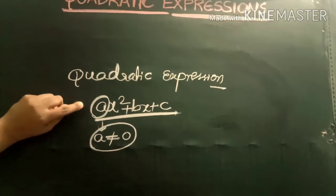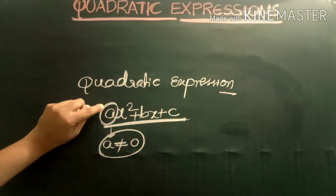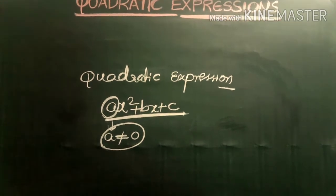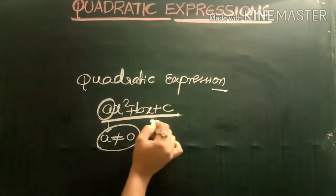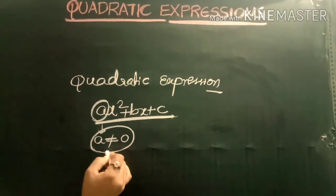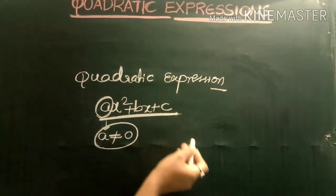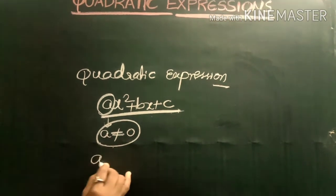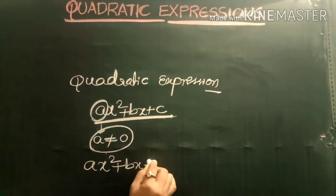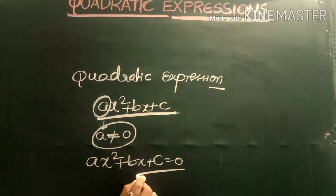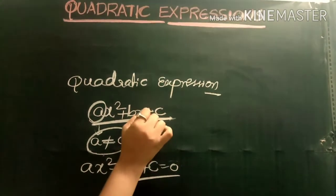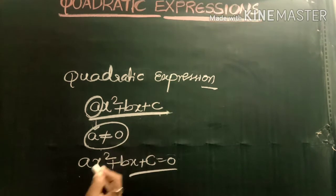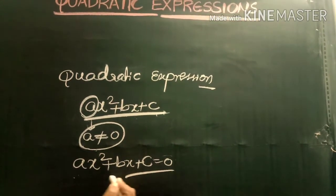Quadratic means the polynomial contains the x² term. If a ≠ 0, then ax² + bx + c is called the quadratic expression. Now, the quadratic equation: ax² + bx + c = 0 is called the quadratic equation. That is, if we set the expression equal to 0, it becomes an equation. So ax² + bx + c is the quadratic expression, and ax² + bx + c = 0 is the quadratic equation.